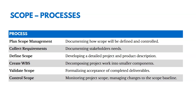The first is Plan Scope Management, where we document how we're going to define and control our scope. Then we collect requirements, documenting the needs of the stakeholders. Then we define scope — taking those requirements and developing a detailed description of the project and the product. Then we create a WBS, a work breakdown structure, decomposing the project work into smaller components. As we monitor the project, we validate scope to formalize acceptance of deliverables, and then control scope to monitor and manage changes to the scope baseline over time.